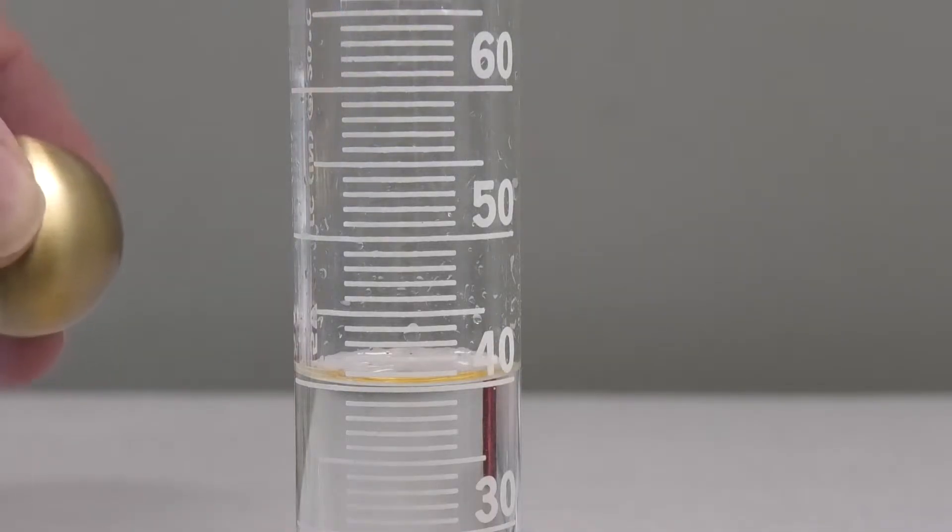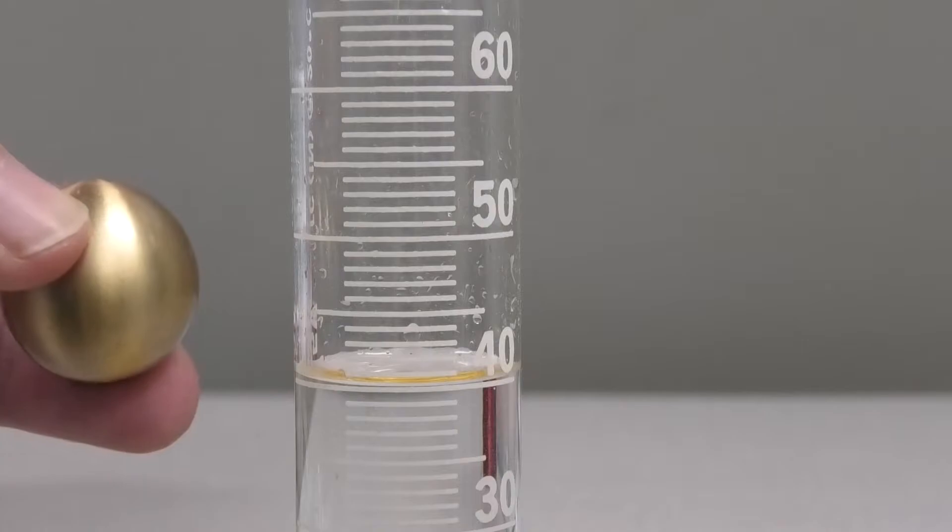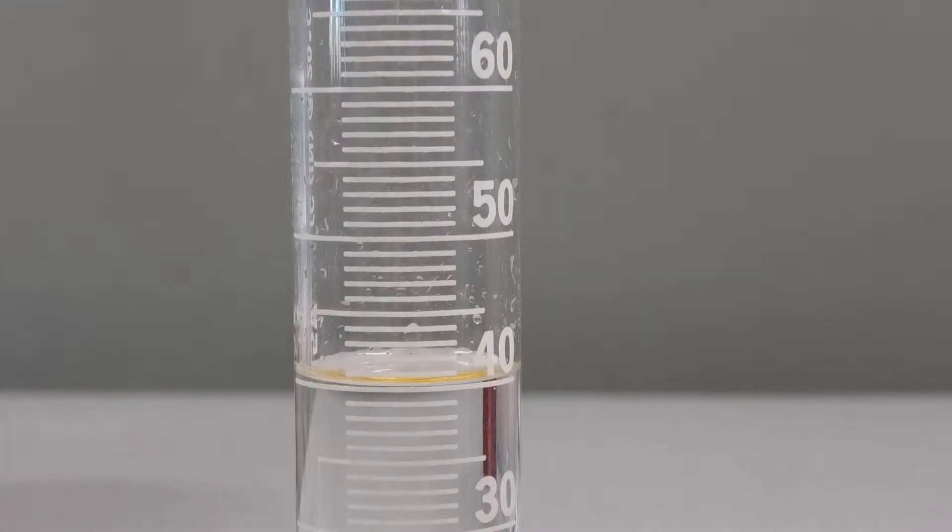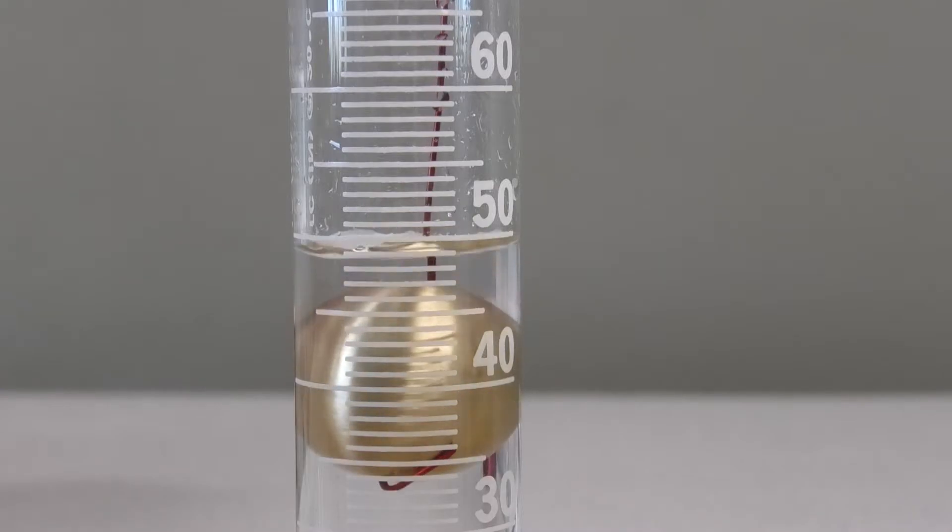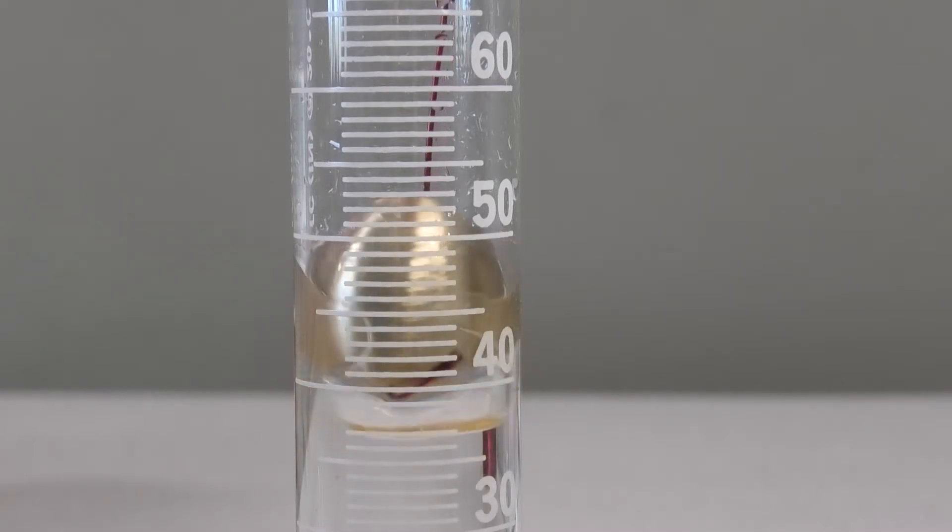The first material that we're going to test out is a piece of brass. We're going to take that piece of brass and put it inside. I'm going to slowly put this in. Now look at the water level after it goes in. I'm going to pull it back out.